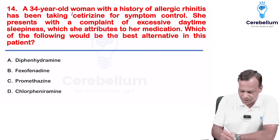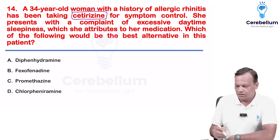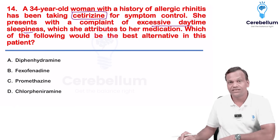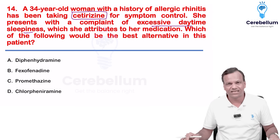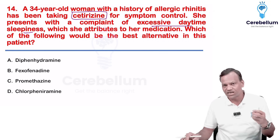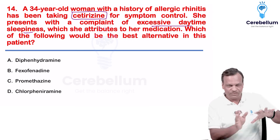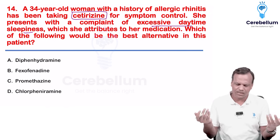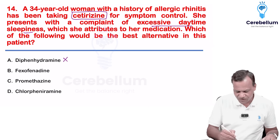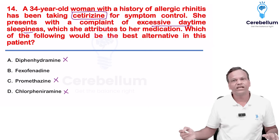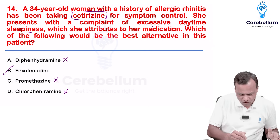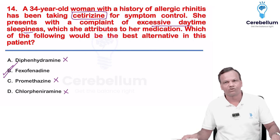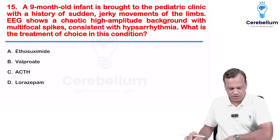A patient is developing daytime sedation with cetirizine. Cetirizine is the only second-generation antihistamine that can cause a little sedation. The alternatives — diphenhydramine, promethazine, chlorpheniramine — are all first-generation. Fexofenadine is a second-generation, non-sedating antihistamine. So the alternative is fexofenadine.